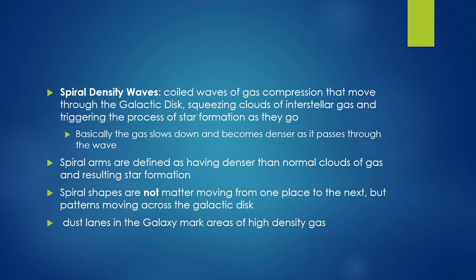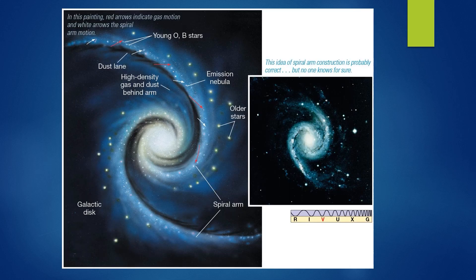Since the wave pattern isn't tied to the galactic disk itself, it avoids the issue of differential rotation, which means the arms would not simply disappear. The spiral shapes are just patterns moving through the disk, not matter actually being moved from place to place. Over much of the galactic disk, the pattern is predicted to rotate slower than the stars and gas, so galactic material catches up with the wave, leading to slowing and compression. Dust lanes mark areas of high density gas, and this begins the process of star formation — we can observe the formation of younger stars more towards the ends of the spirals and older stars towards the center.